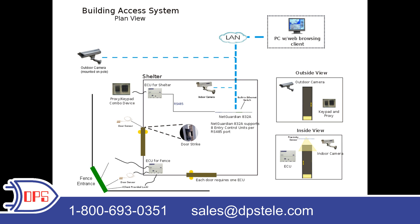When installing the ECU, it's one unit per door with the door sensor, door strike, keypad and/or proxy reader, and proxy card and/or key fob. The motion detector and push-to-exit button are optional. By deploying the solution, the client will know when the door has been opened, who entered, and when, if that person is using a proxy card or key fob for entry. If the door is broken into, you will be notified as well. This information can be found on the ECU's event log when logged into the web interface.